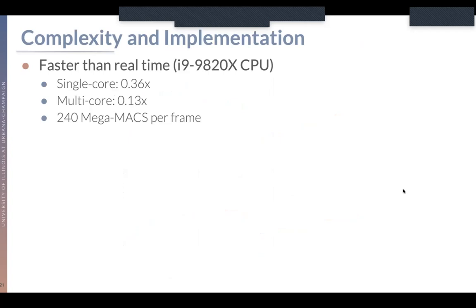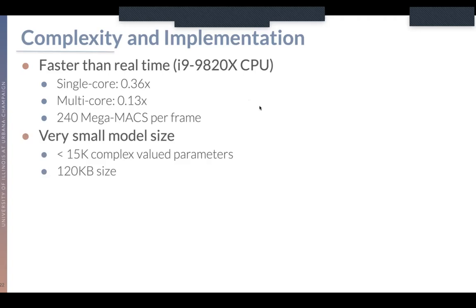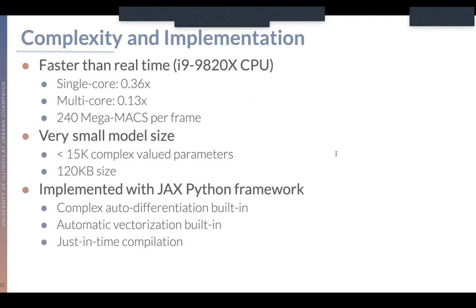What's particularly exciting about this AutoDSP optimizer is that it remains competitive in terms of complexity and is still simple to implement. Using a consumer CPU, we can operate in faster than real-time on a single core with a real-time factor of about 0.36, and a real-time factor of about 0.13 in the multi-core scenario, consuming about 240 mega multiply-accumulates per frame. The model is very small — less than 120 kilobytes using about 15k complex-valued parameters. These numbers are all from a pure Python implementation using the JAX framework, which has complex auto-differentiation, automatic vectorization, and just-in-time compilation built in.